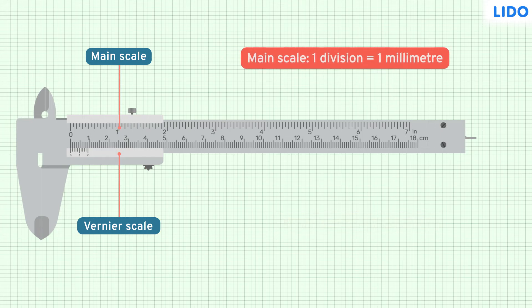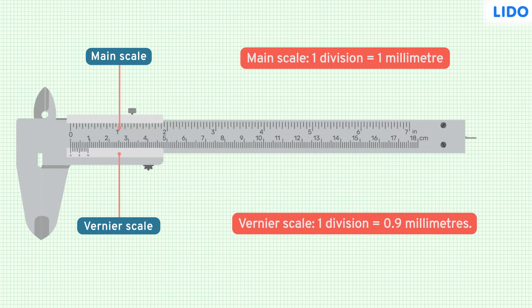On the main scale, one division is 1 mm. On the Vernier scale, one division is 0.9 mm.